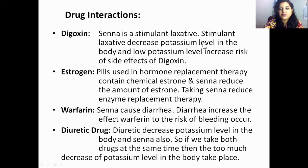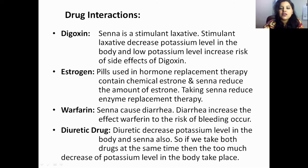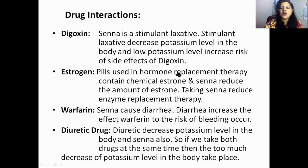Low potassium level increases the risk of side effects of digoxin. As Senna causes bowel motion, it decreases potassium and minerals in the body. When a patient takes digoxin at the same time, digoxin binds with potassium — so with low potassium, free digoxin remains in the body and may cause side effects.